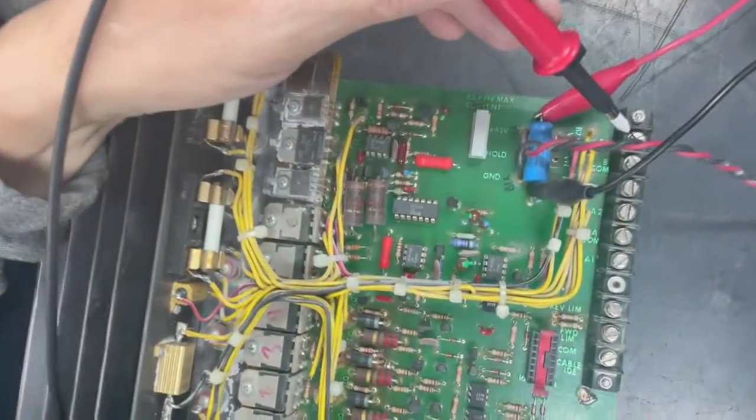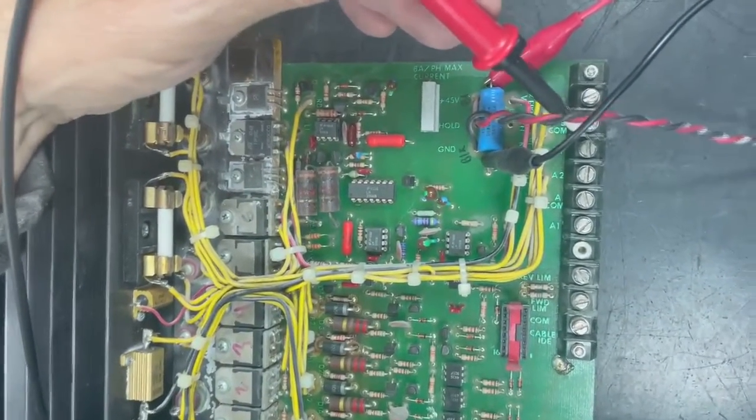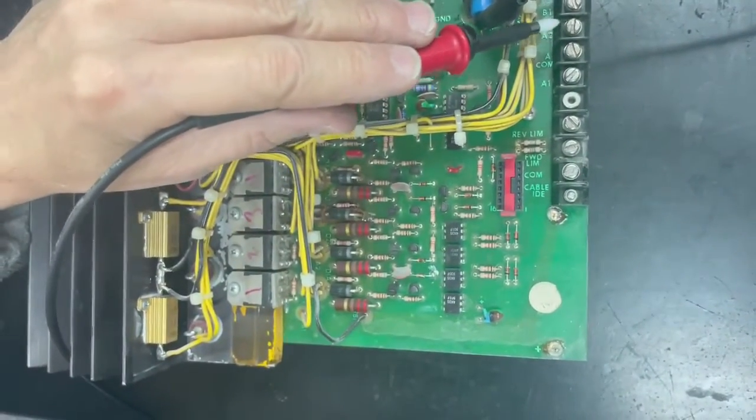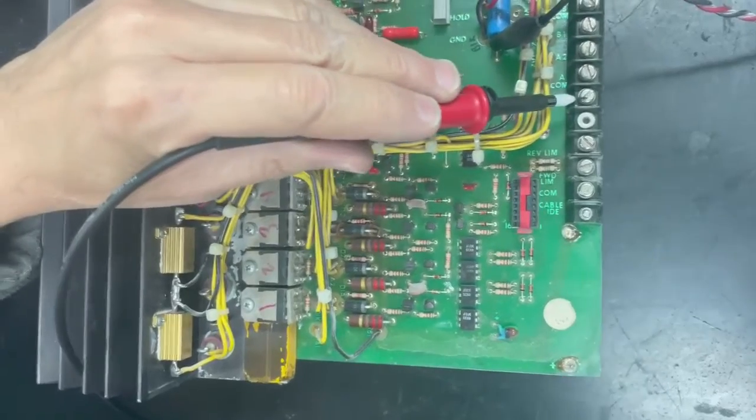If we look here, we have our B channel 2, B common, and B1, and here is our other channel for the servo: A2, A common, and A1.